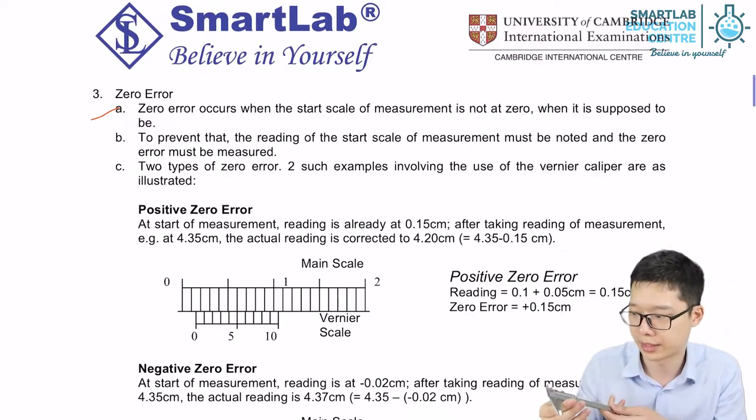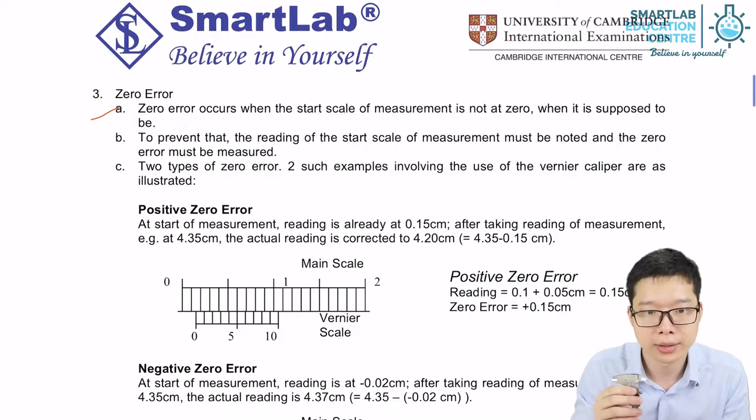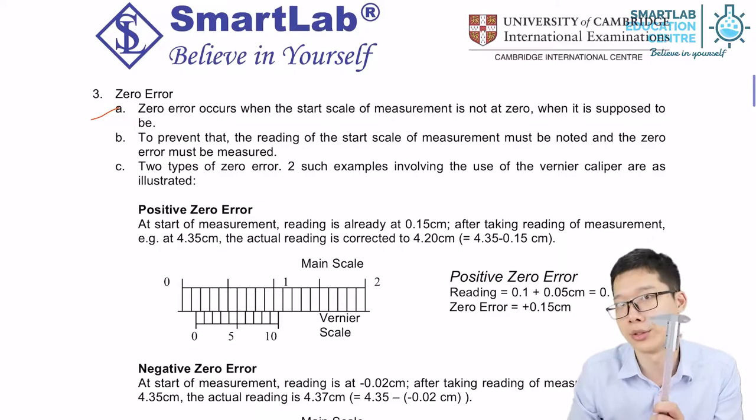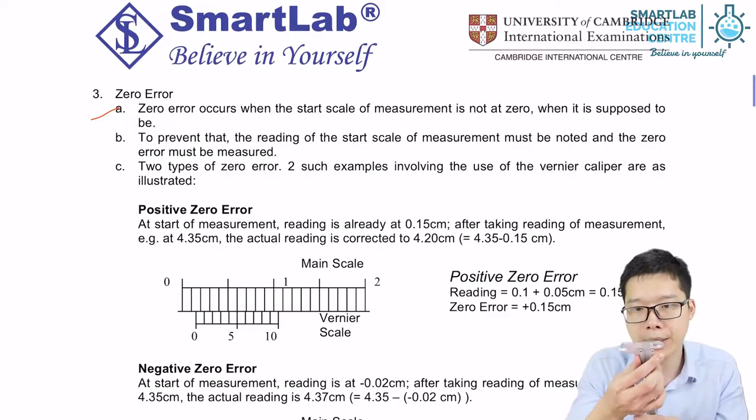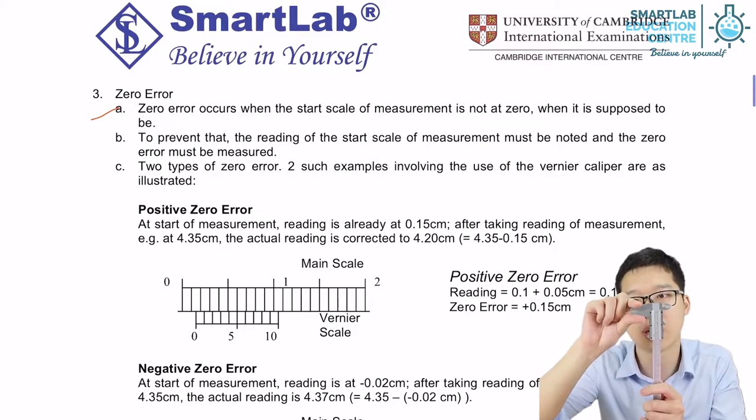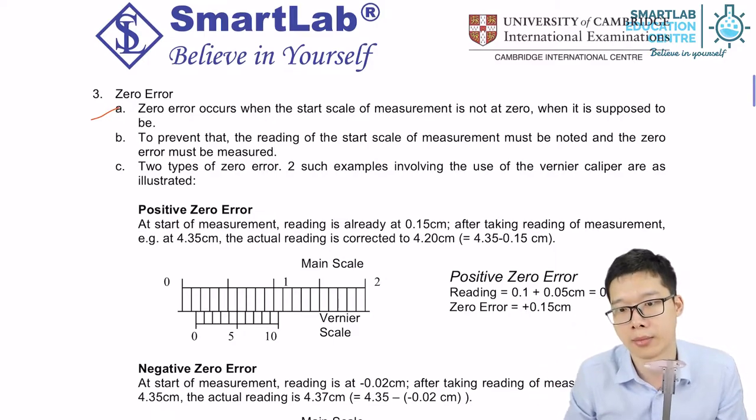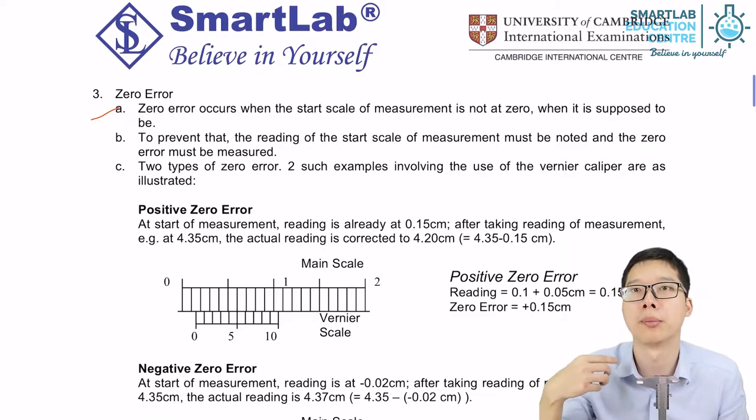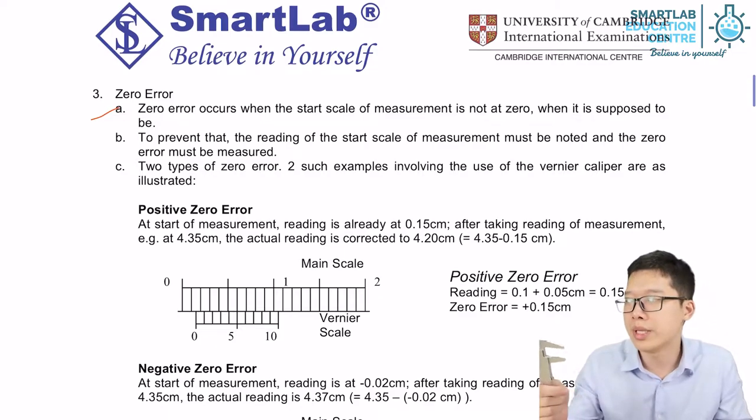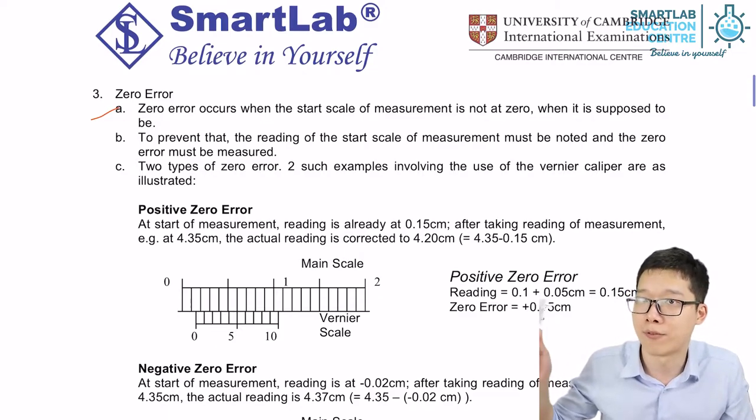For example, if I'm using my vernier caliper over here, by right, without clipping in anything, the reading should be zero. But sometimes, probably due to wear and tear, without anything clipping in between the outer jaws, it can be a reading, probably positive, probably negative. It means without even putting anything, I have already gotten a reading.